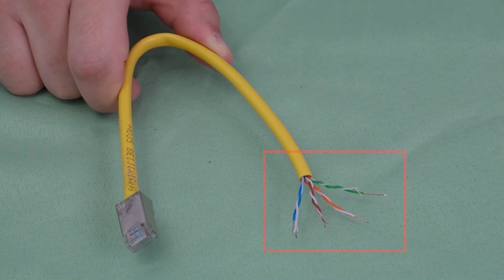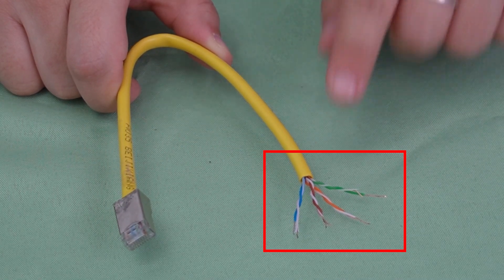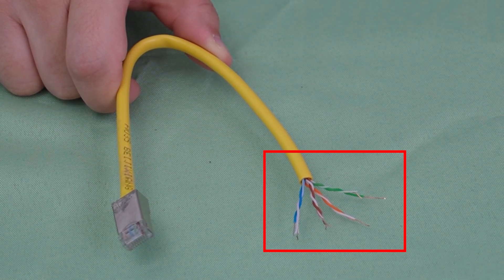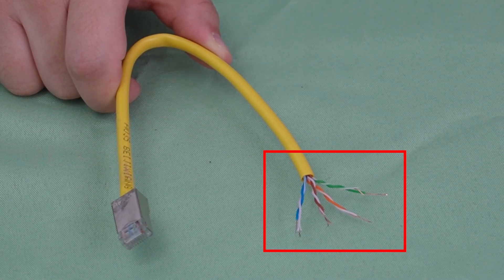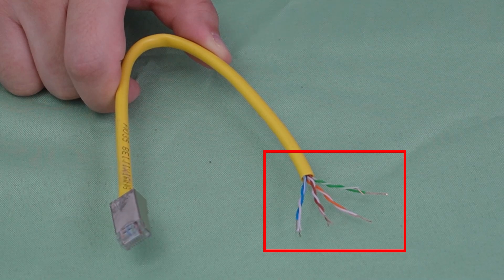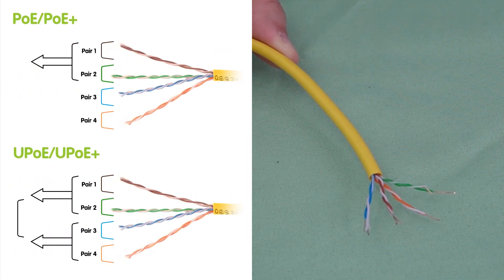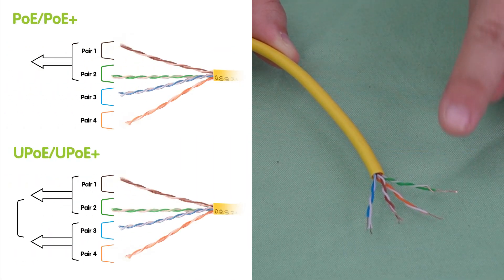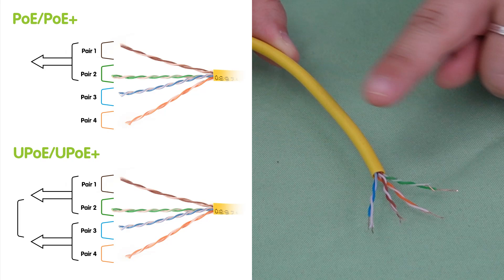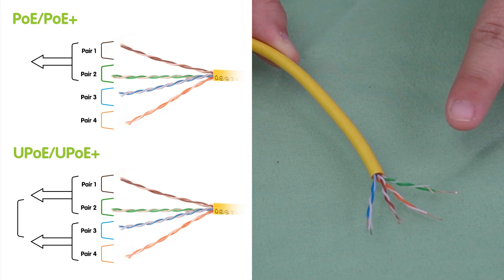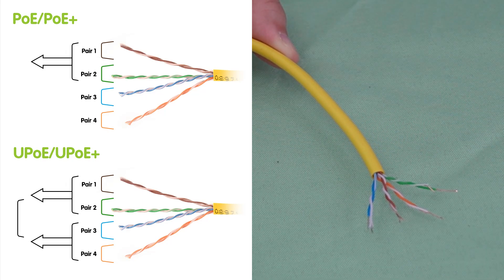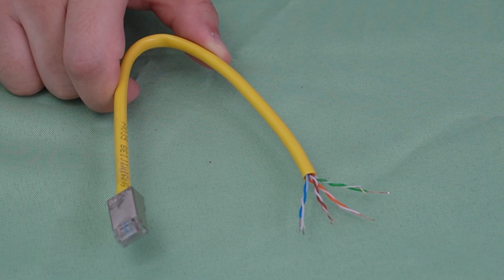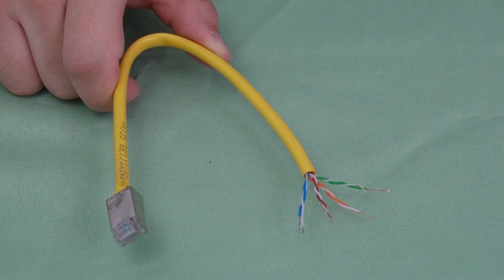Inside this cable, data seeps through twisted pairs while power rides alongside. PoE uses two pairs for data and power, or all four pairs for high-power devices. It's like a secret tunnel for electricity.